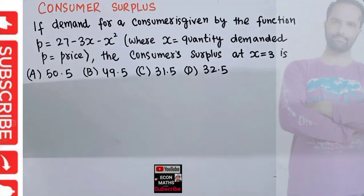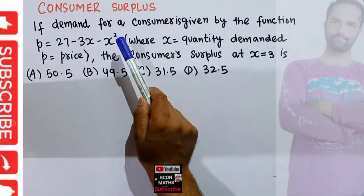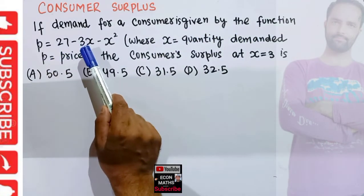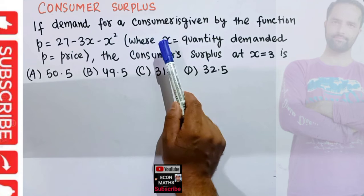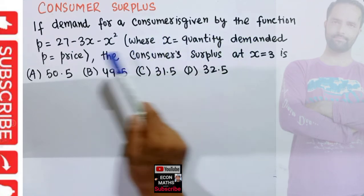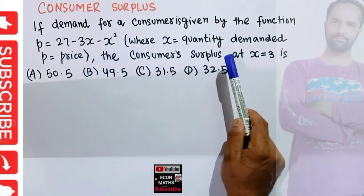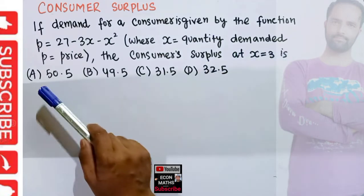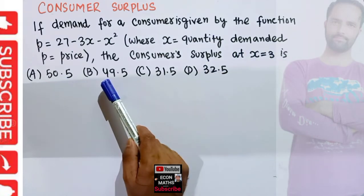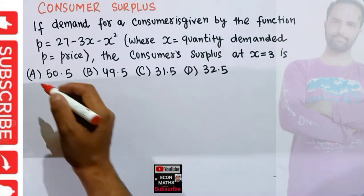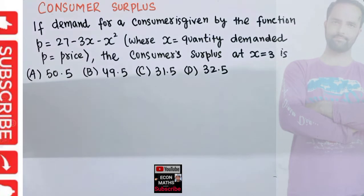In this video we will solve a problem on consumer surplus. The question is: if the demand function is given by P equals 27 minus 3X minus X squared, where X denotes the quantity demanded and P is the price, find the consumer surplus when X equals 3. The options are 50.5, 49.5, 31.5, or 32.5.